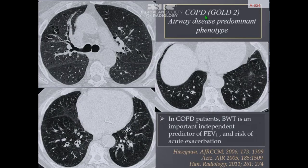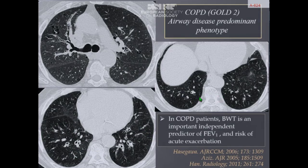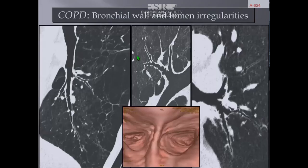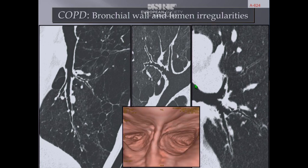The first example shows a patient with COPD presenting a typical airway-disease-predominant phenotype. There is little emphysema in the upper lobes, but a very striking thickening of the airway walls in the lower lobes with slight dilatation of the airway lumen, and decreased lung attenuation in the lower lobes without emphysema. Keep in mind that in COPD, bronchial thickening is an important independent predictor of FEV1 and risk of acute exacerbation. Using minimum intensity projection and swivel, we see irregularity of the lumens and walls of the bronchi, particularly in patients with typical chronic bronchitis.